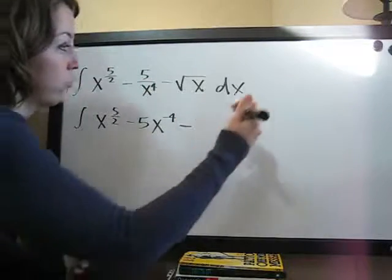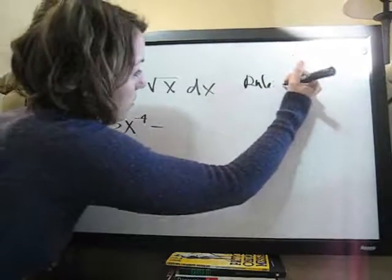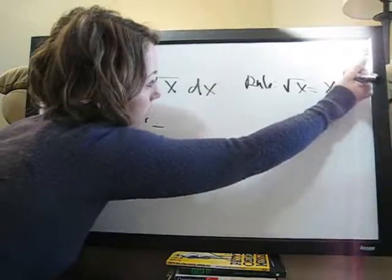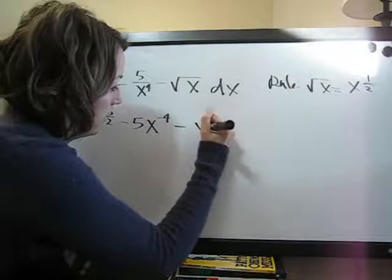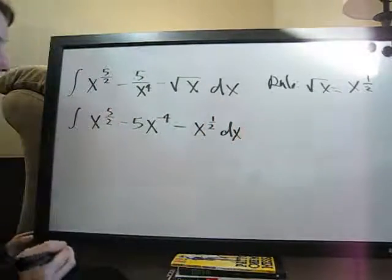And then of course we know the square root of x is the same as x to the 1 half. So, we're going to say minus x to the 1 half dx to make this easier.